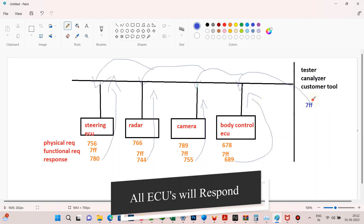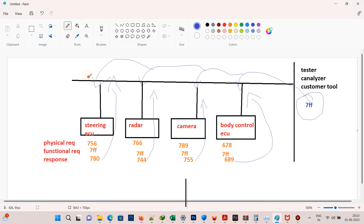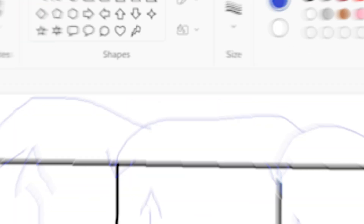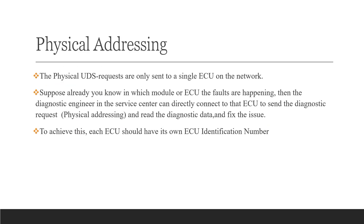Physical addressing requests are only sent to a single ECU on a network. If you already know which module or ECU has the fault, then the diagnostic engineer in the service center can directly connect to that ECU to send the diagnostic request — that is physical addressing — and read the diagnostic data to fix the issue. To achieve this, each ECU should have its own ECU identification number.